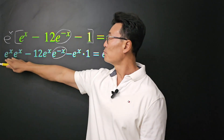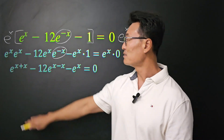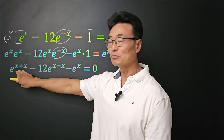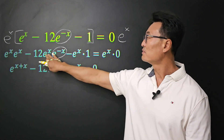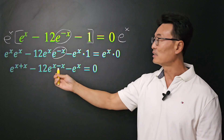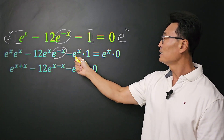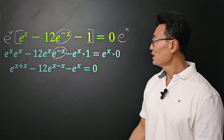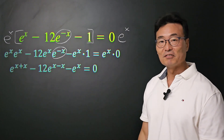Next, if we combine e to the x times e to the x, that's the same thing as e to the x plus x — we're just adding the exponents. And then, of course, we have the x minus x, so we have e to the x minus x. Again, we add the exponents. And then e to the x times 1 is, of course, e to the x. And on the right side, it's just going to be 0.